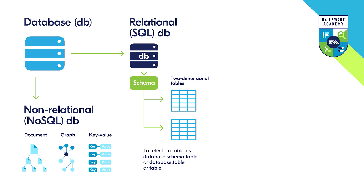Databases contain schemas. A schema is a collection of database objects that helps you organize them into logical groups and make them more manageable. You can also allow many users to work with a single database without interfering with each other. A schema might contain multiple tables — the schema acts as a folder and the table acts as an object in that folder. The full path to a table looks like this: database.schema.table.